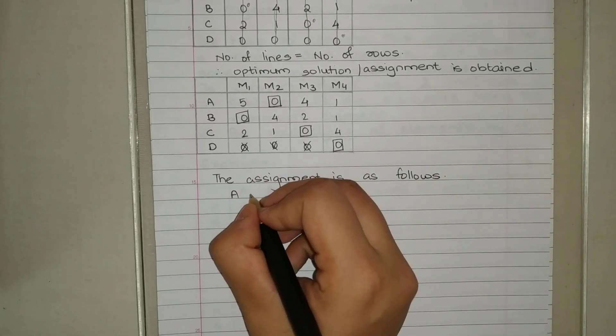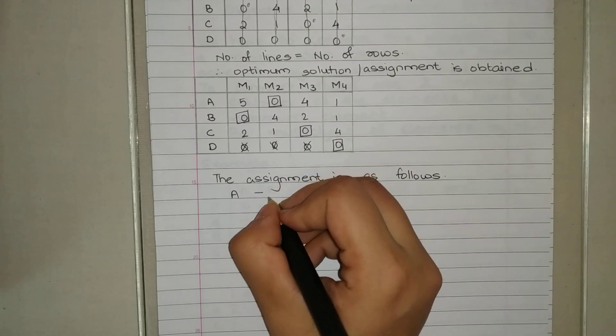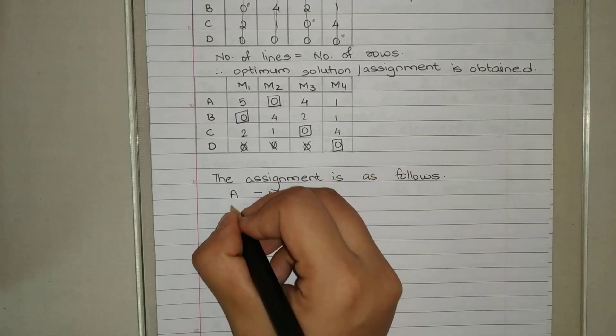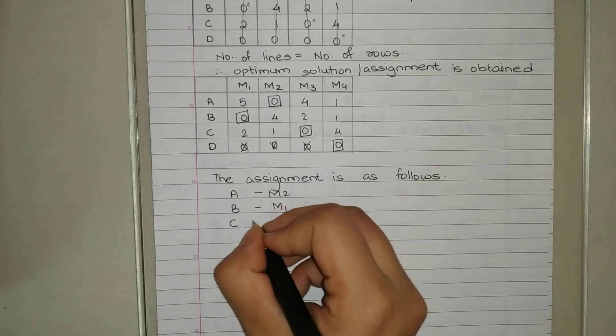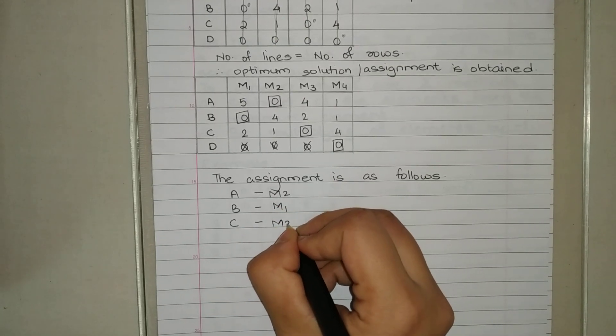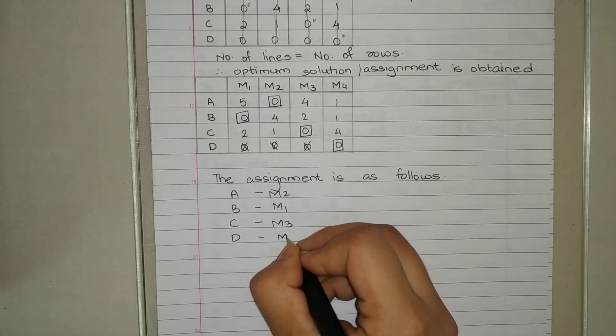So, job A will be done by man two, B will be done by man one, C is done by man three, and D is done by man four.